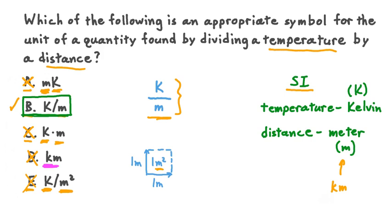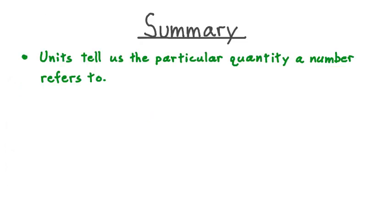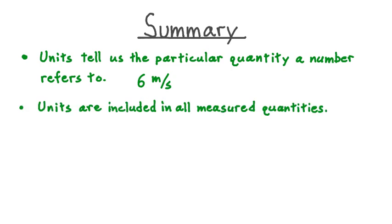Let's take a moment now to summarize what we've learned about units of measured quantities. Starting out, we saw that units are so useful because they tell us what particular quantity a number refers to. If we were looking just at a pure number all by itself, we wouldn't know what that number referred to. But when we attach a unit to the number, say in this case meters per second, then we know that this particular number, six, refers to a speed, and specifically a speed in meters per second. Because units help us identify what a certain number refers to, units are included in all quantities that we measure.